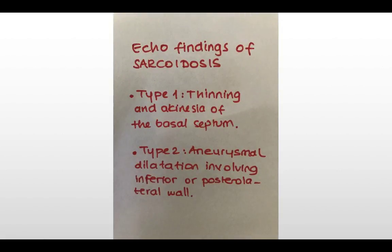Looking at the heart by echo, what are the main types of findings you can expect in patients with sarcoidosis? The first type, type 1, is characterized by thinning and akinesia of the basal septum. The second type, type 2, is characterized by aneurysmal dilatation involving the inferior or posterolateral wall of the left ventricle.